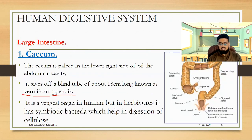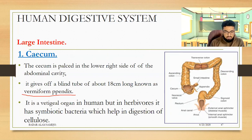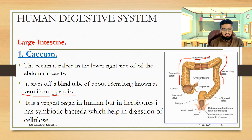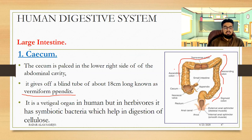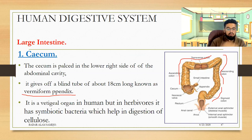From here you can see that there is a part that goes up, then across, then down. The colon has four types of parts: ascending colon, transverse colon, descending colon, and sigmoid colon.